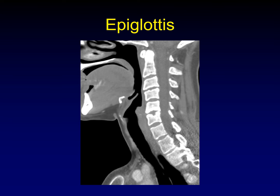The normal epiglottis sticks up from the larynx, paralleling the base of the tongue. Here's the base of the tongue, here's the epiglottis extending into the oropharynx. It marks the dividing line between the oropharynx, specifically the laryngeal vestibule, and also the hypopharynx back here.